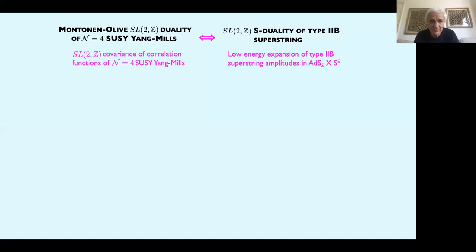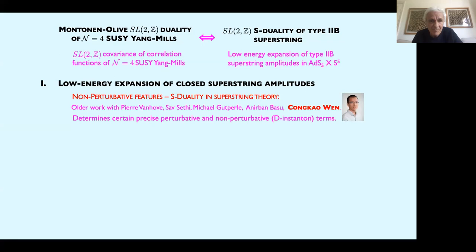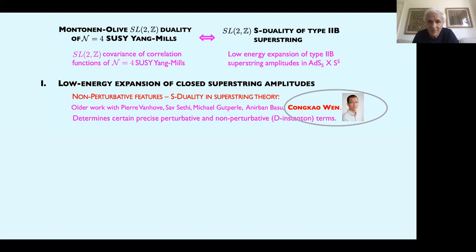This is really in the spirit of a significant amount of work which has been done by various groups on trying to make contact between the four-dimensional Yang-Mills and the flat space limit of the ADS-5 cross S-5 string theory. The first part of the talk will give the background in string theory for what, in the second half, will be the aim to reproduce this from the conformal field theory. I've listed here collaborators including Konkar Wen at Queen Mary, who has worked on both the first and second half of this talk.